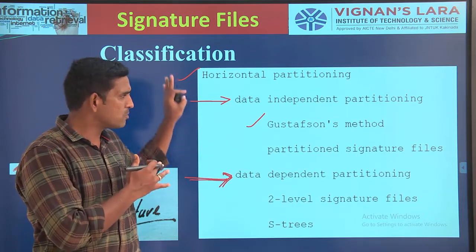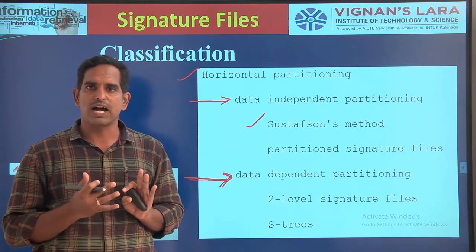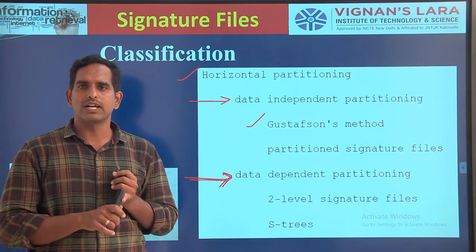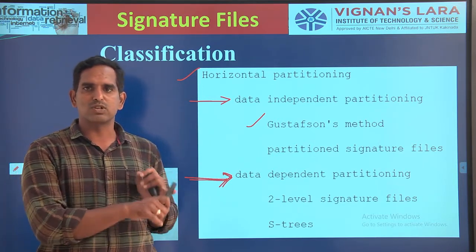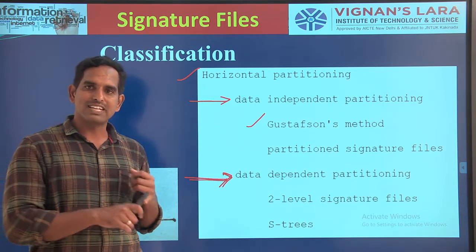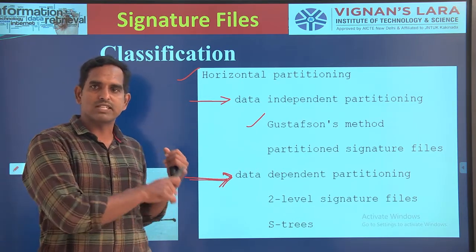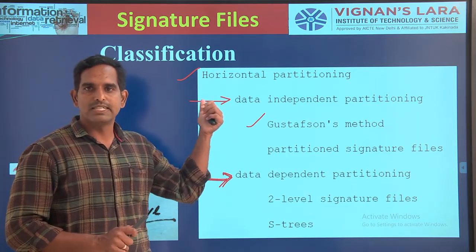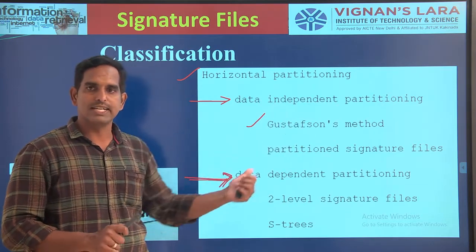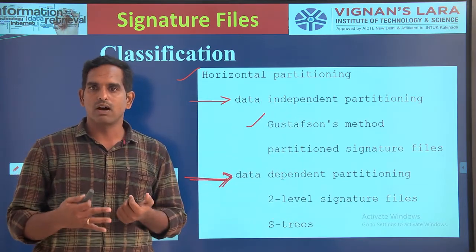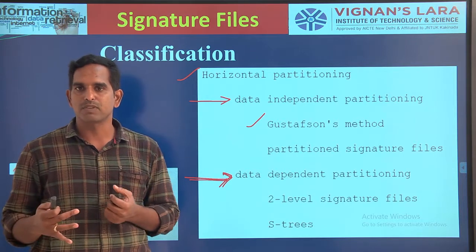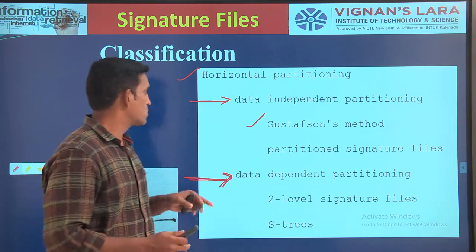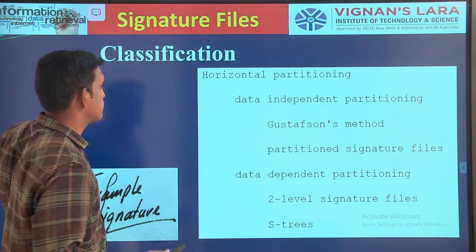This is about all the classification parts you are having as a part of your signature files. You are having basic signature file without compression and with compression, and we are having vertical partitioning with compression and without compression, and horizontal partitioning with data independent partitioning and data dependent partitioning. We are going to look at all these six different signature file types in further sessions.